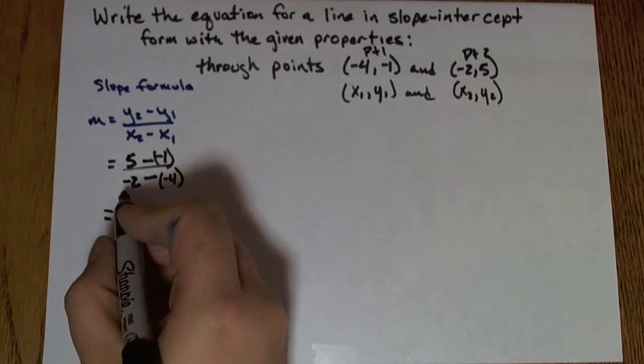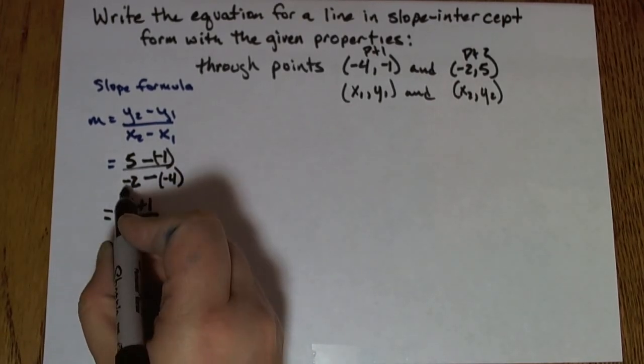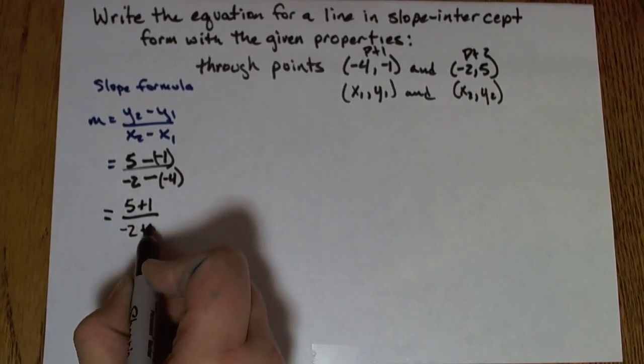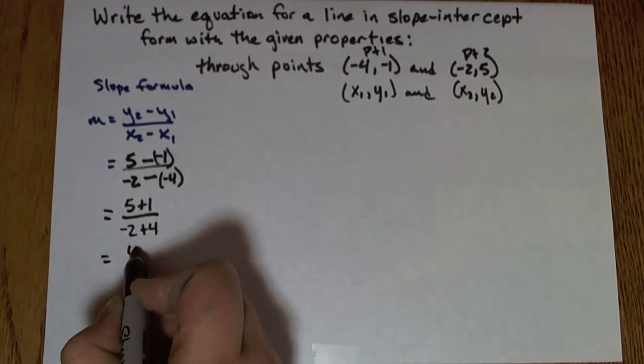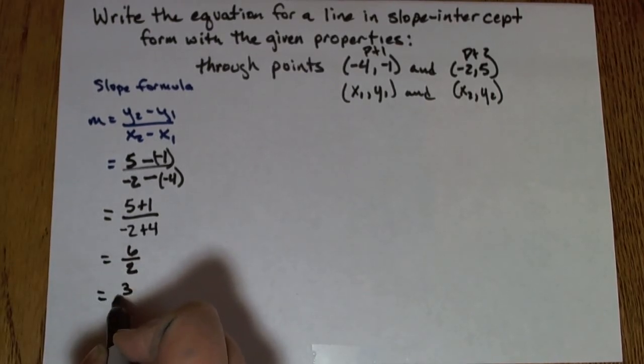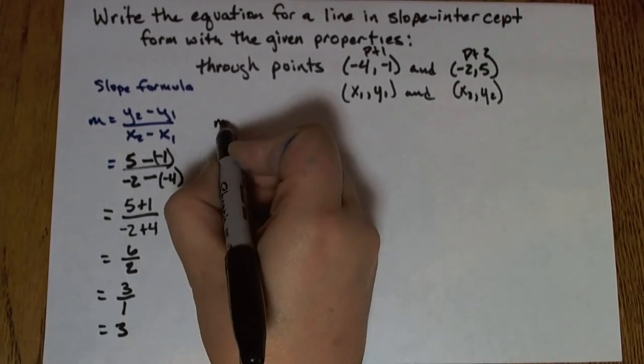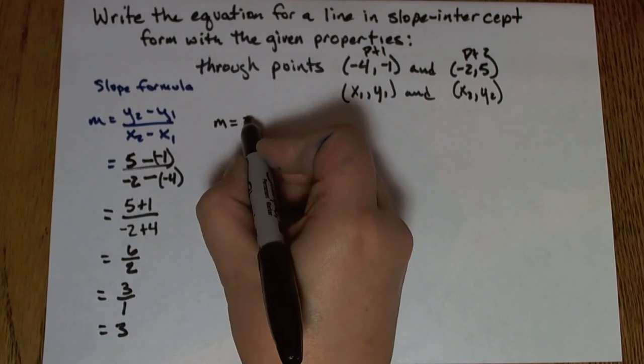So I have 5 minus negative 1, which is the same as 5 plus 1. Negative 2 minus a negative 4, the same as negative 2 plus 4. Simplifying, I'll have 6 over 2, which is the same as 3 over 1, or 3. So I know that my slope of my equation is 3.